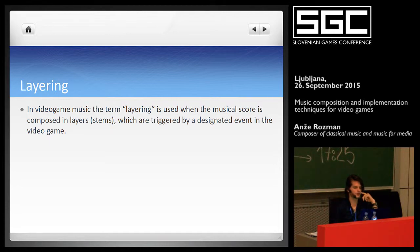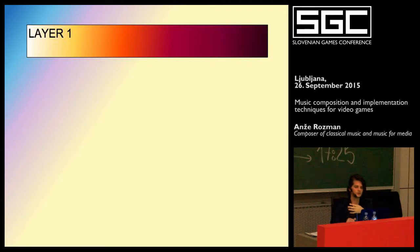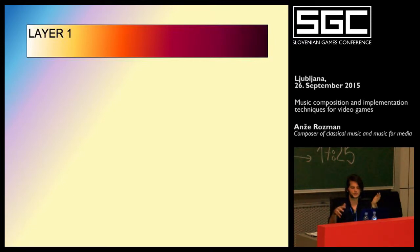The next technique is layering. In a video game, the term layering is used when the musical score is composed in layers or stems, which are triggered by a designated event in the video game. The music I'm going to show you is from a game I'm currently working on, and the game states are: exploring, spotted enemy, engaging enemy, and near death — where your hero has low health. Every layer corresponds to one game state.